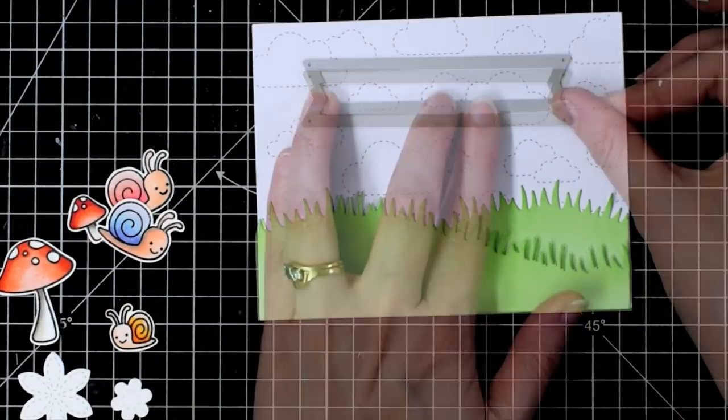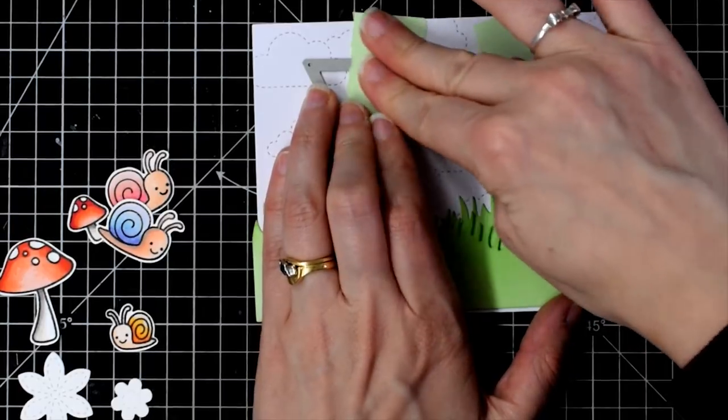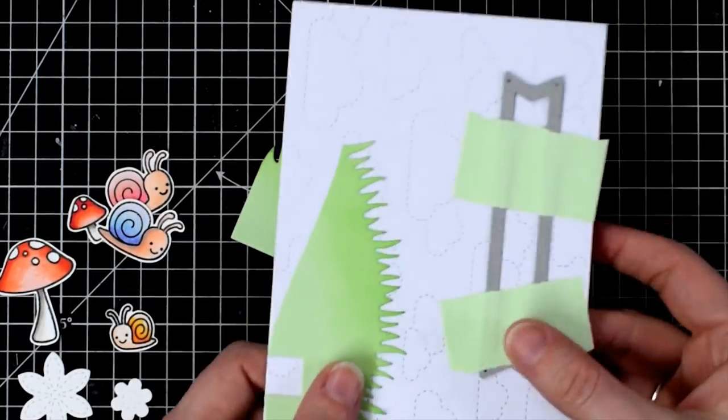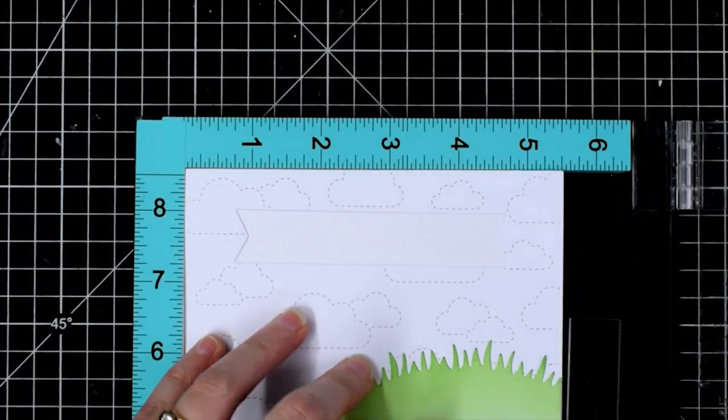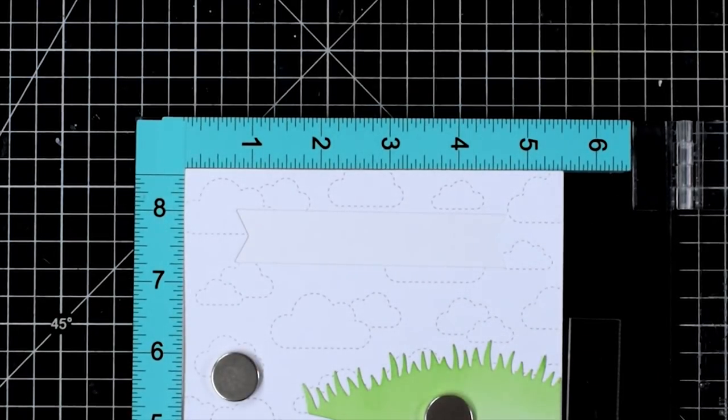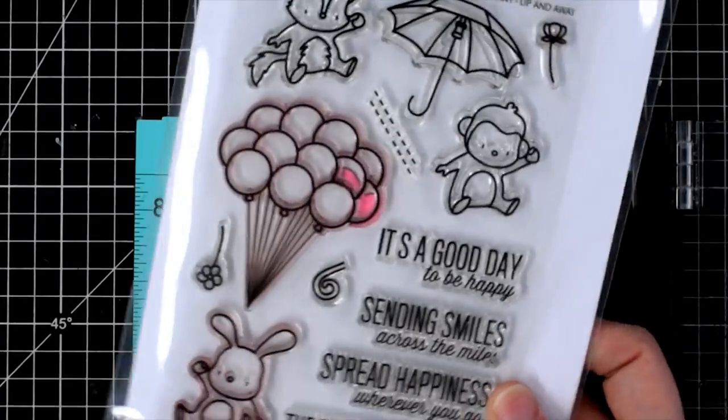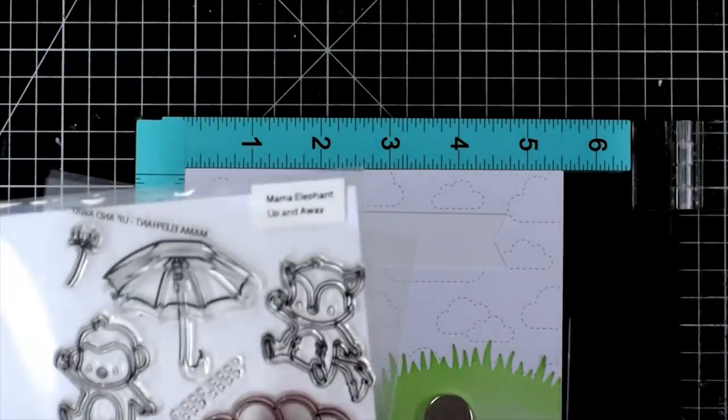I've also grabbed a banner die that I had in my stash and I'm going to cut out this banner shape into my backdrop which will allow me to stamp my background onto the front of a card blank and it will be a nice smooth surface for my greeting.